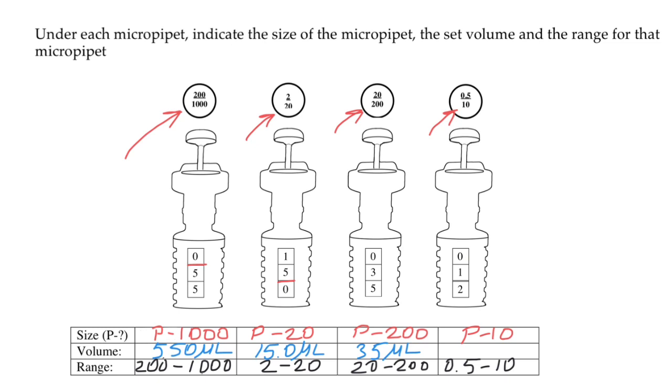Again, imagine that we have here a decimal point. It is actually 1.2 microliters.